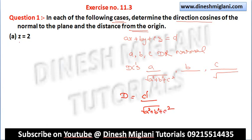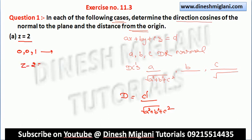First question: the plane is Z = 2. The direction ratios of the normals are 0, 0, 1. The direction cosines are the same — 0, 0, 1 — because when we divide by √(A²+B²+C²), that equals 1. For the distance of the plane from the origin, writing it as Z − 2 = 0, the distance equals |−2|/√1 = 2.